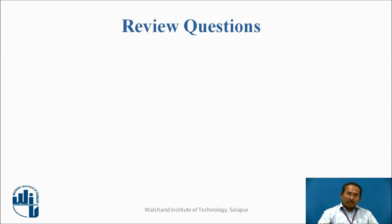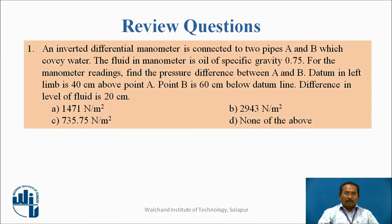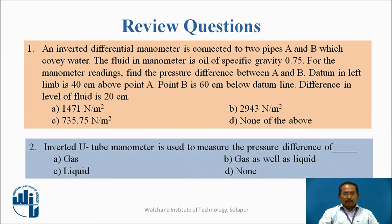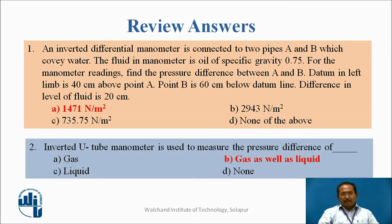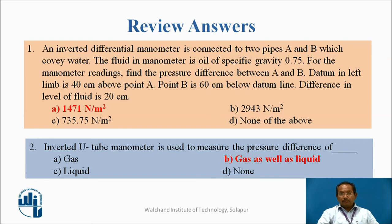These are some review questions which you can calculate quickly. The answer for the first one is 1471 N/m². We can use the inverted U-tube manometer for gas as well as liquid, with the condition that the manometric liquid must have specific gravity less than the flowing liquid and must not mix with it.